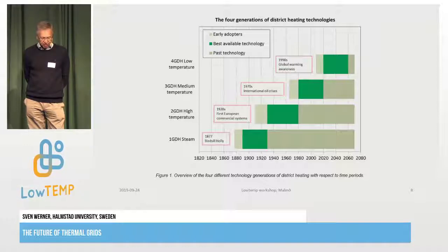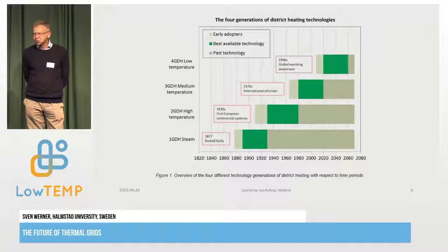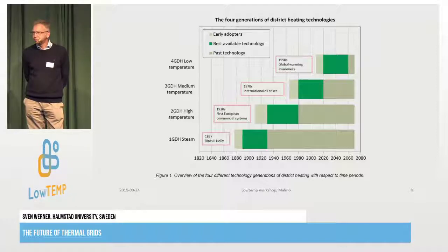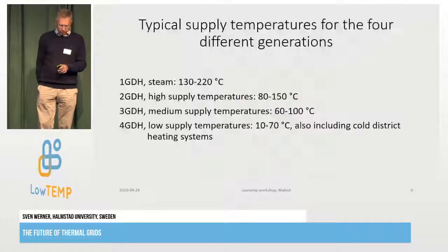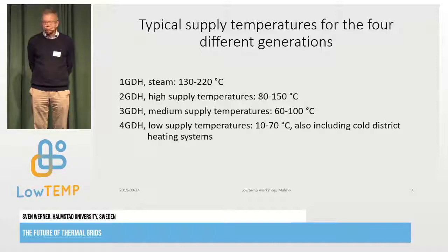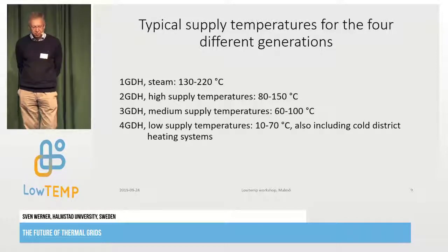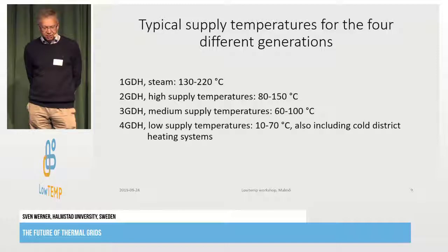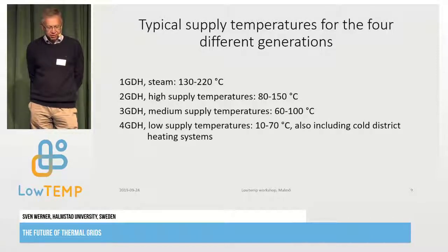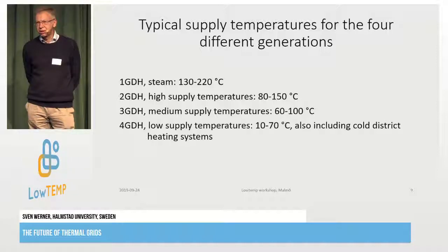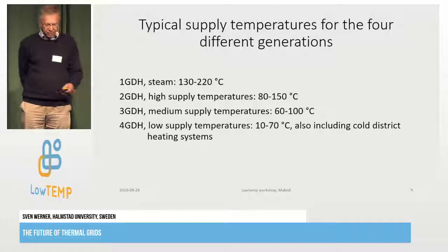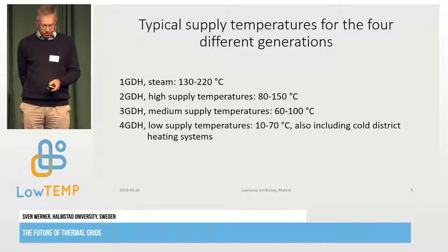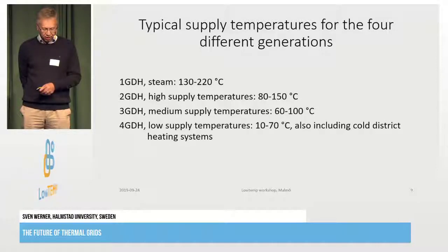Every generation is associated with time. The typical supply temperatures we have used range from very high — steam — down through high supply temperatures still existing in some European systems like Geneva, which is a second generation system. Then we have medium supply temperatures between 60 and 100 degrees. The low temperature we're talking about is something between 10 and 70 degrees. We also include cold district systems distributed at medium-to-low temperature in the networks, with local heat pumps at the customer side.